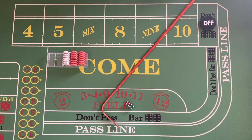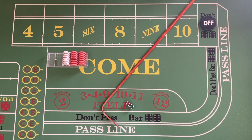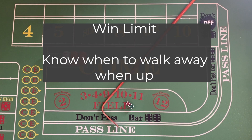A good win limit is about 20 to 30 percent. That's a pretty good return — if you put that money in the bank and 30 to 40 minutes later you've made 30 percent, it's an awesome return. You also need to know how to walk away when you're up.